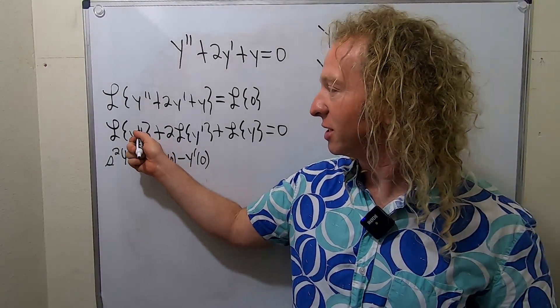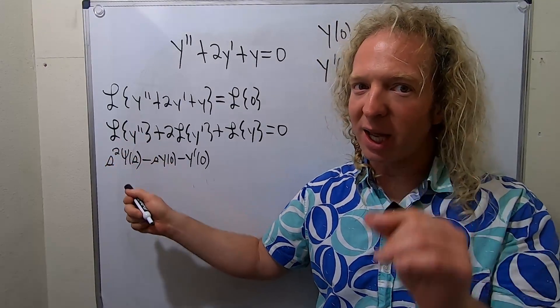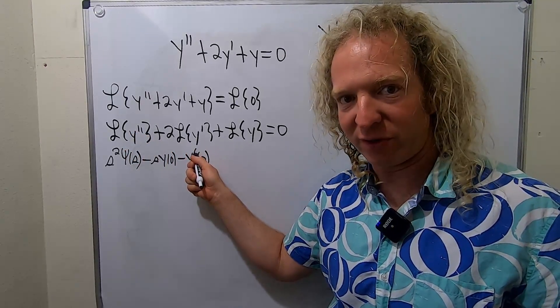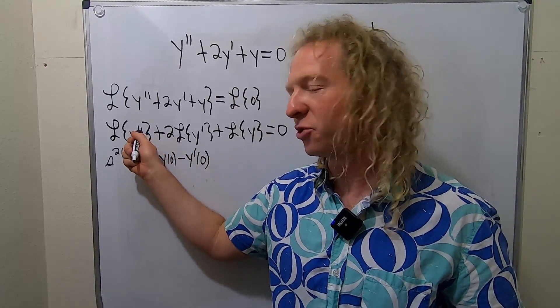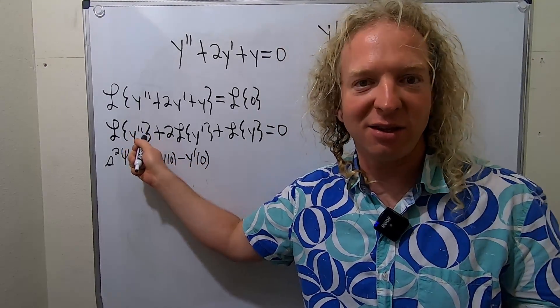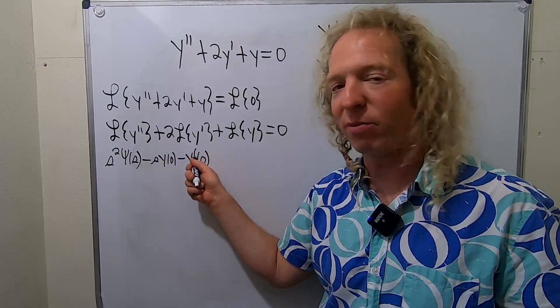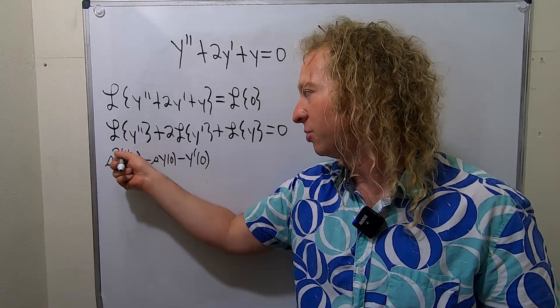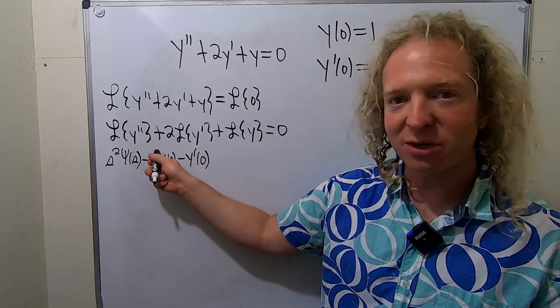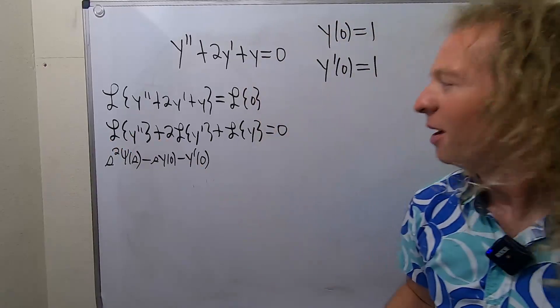So I just know that whenever it's the second derivative it always starts at two and I know it ends at one less derivative. So if it's the second derivative it ends at the first derivative. If it's the third derivative it would end at the second derivative. If it's the fourth derivative it would end at the third derivative etc. So then I know that it has to end at Y prime so that must be Y of zero. So notice it's two one and then there's an S to the zero here. So it's like the powers go down. S squared, S to the one, S to the zero. And then Y prime, Y of zero, there is no Y.